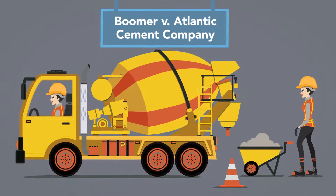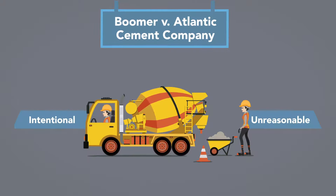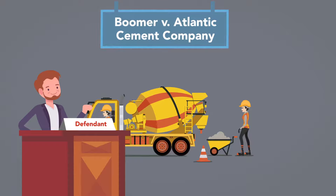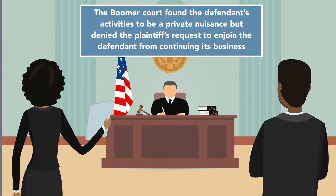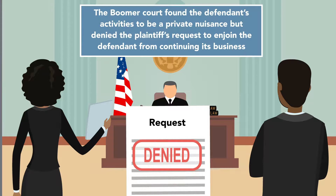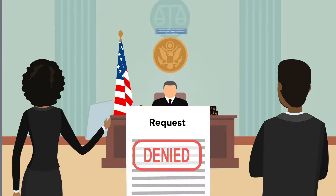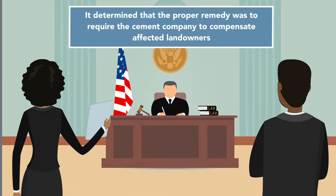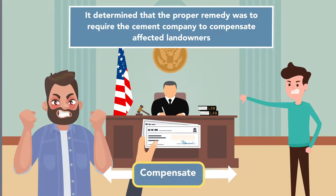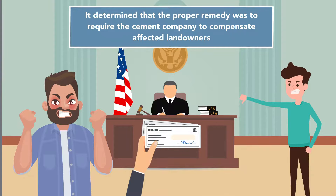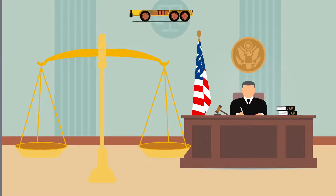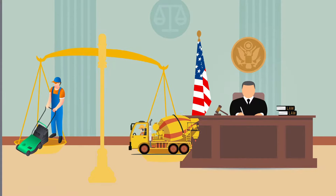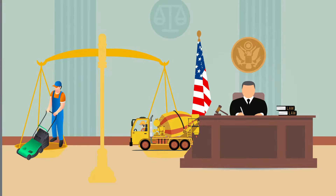Because the cement company's activities were intentional and unreasonable, it was legally liable for the damage the disruptions caused to adjoining landowners. The Boomer Court found the defendant's activities to be a private nuisance but denied the plaintiff's request to enjoin the defendant from continuing its business. Instead, it determined that the proper remedy was to require the cement company to compensate affected landowners. The Boomer Court struck a balance between the cement company's lawful but disruptive activities and the neighboring landowners' ability to use and enjoy their properties.